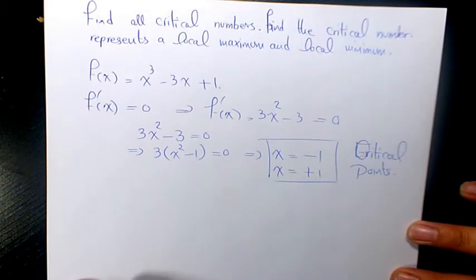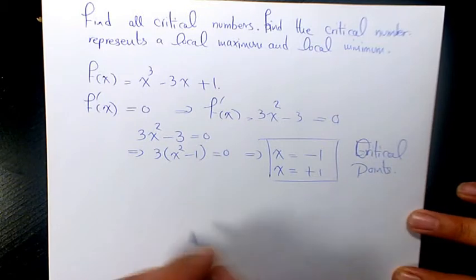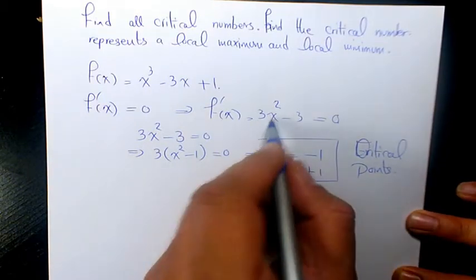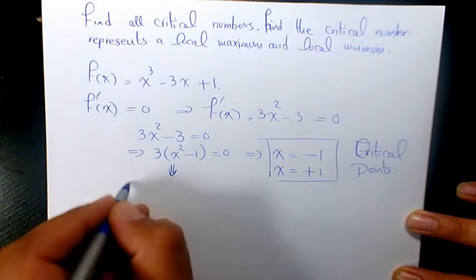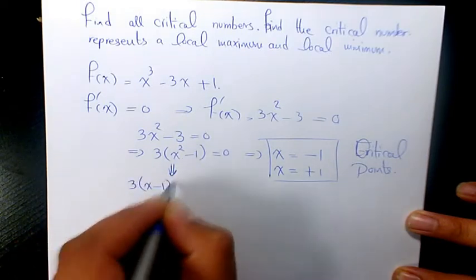Now we need to find out if they are local minimum or local maximum. What we can do here, we have 3 times x squared minus 1, or 3 times (x minus 1) times (x plus 1).